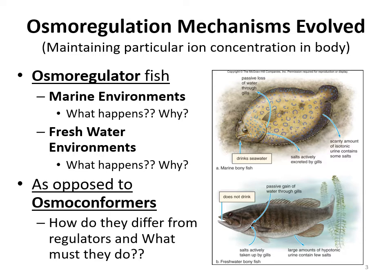Fish are often osmoregulators, using different mechanisms depending on whether they're in fresh water or marine (salty) water. In marine environments, which are high-salt and therefore hypertonic, fish lose a lot of water, so they must drink seawater to compensate.